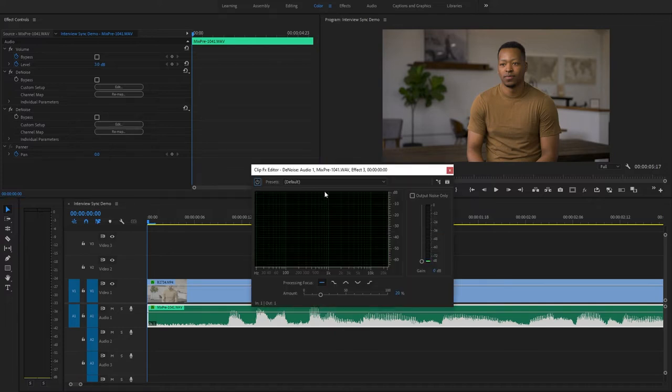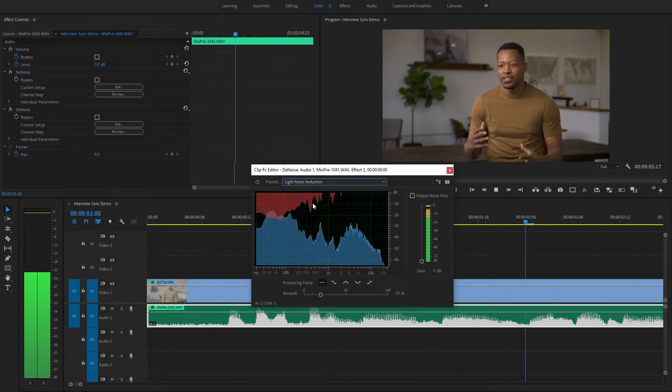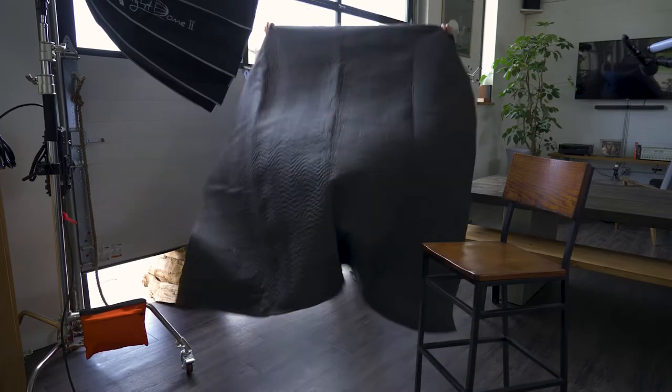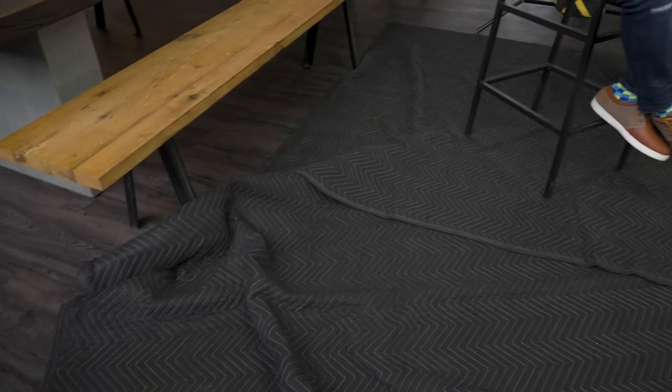If there is some noise we can't control, it may be able to be removed with denoise effects during editing. We also check the echo of the room to see if it's distracting. One way to reduce echo is to place sound blankets around the room.